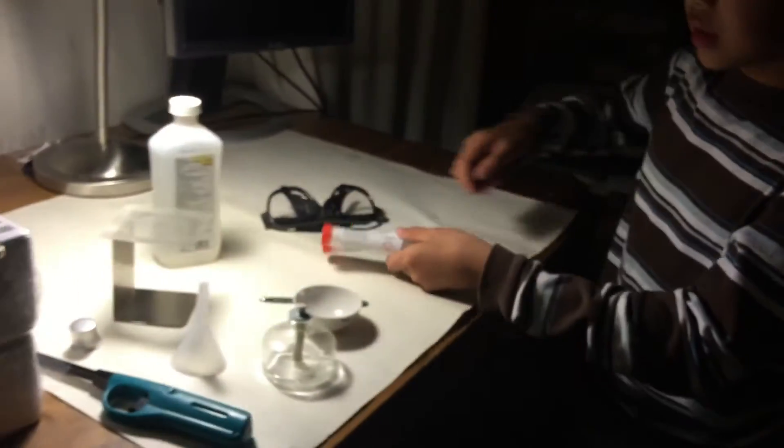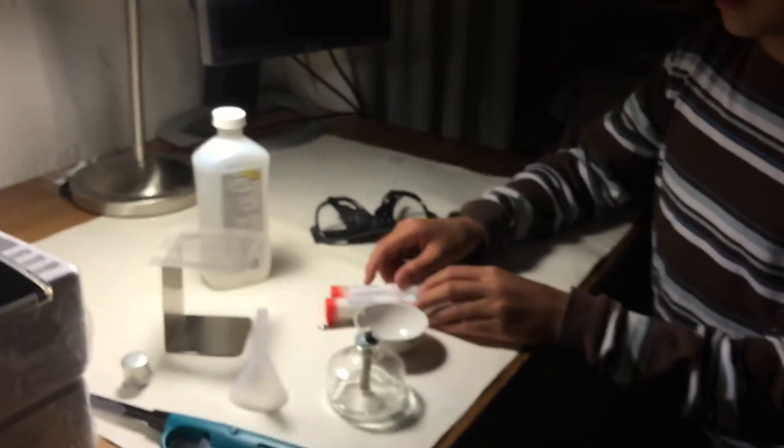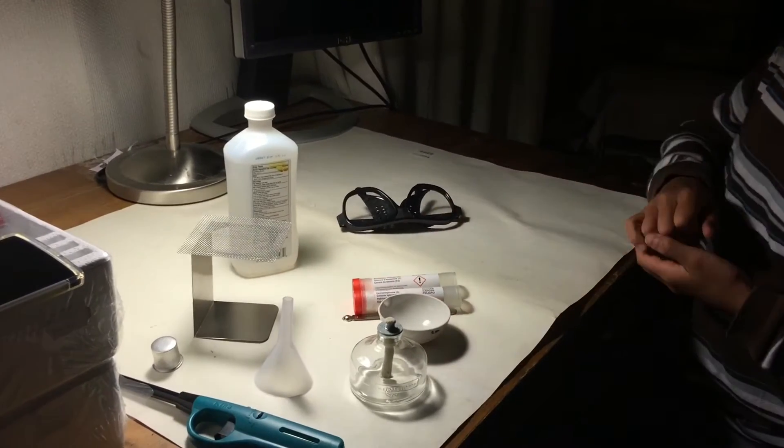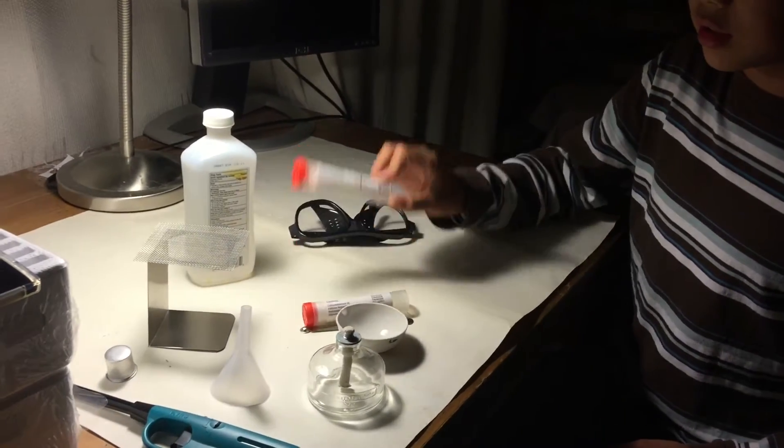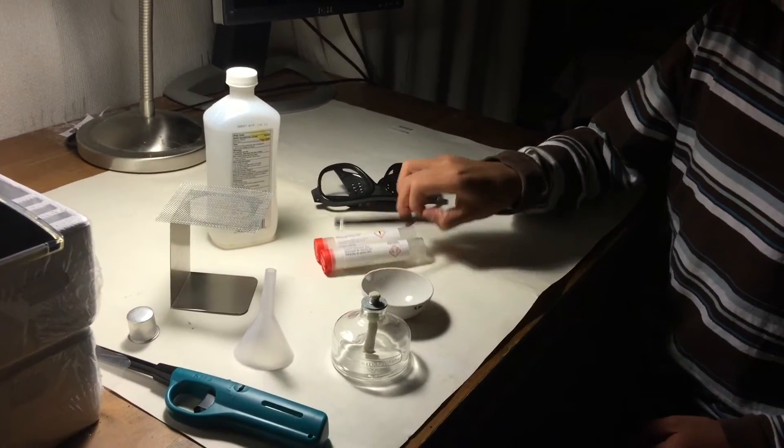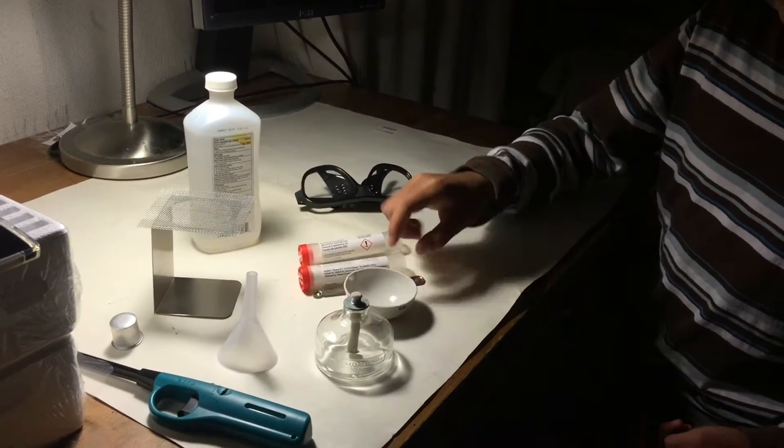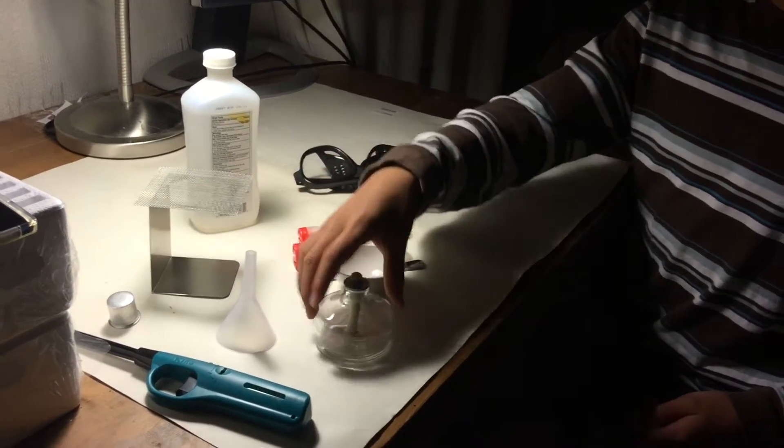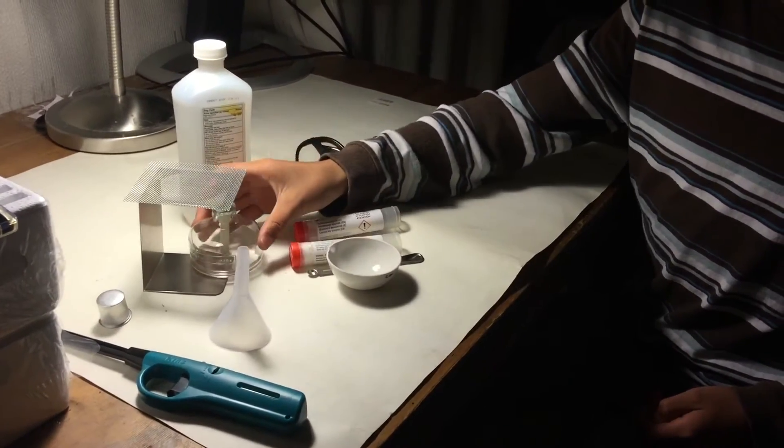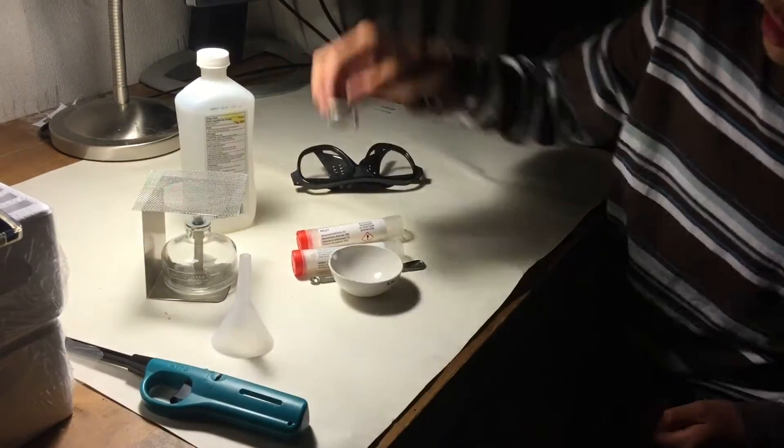The materials you need are safety glasses, aluminum chloride, calcium hydroxide, a measuring spoon, an evaporating dish, and an alcohol burner with accessories.